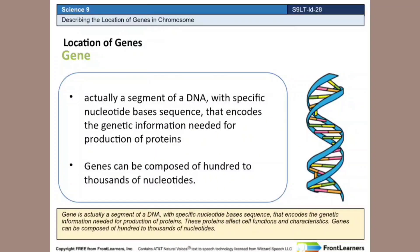A gene is actually a segment of the DNA with a specific nucleotide base sequence that encodes the genetic information needed for the production of proteins. These proteins affect cell functions and characteristics. Genes can be composed of hundreds to thousands of nucleotides.